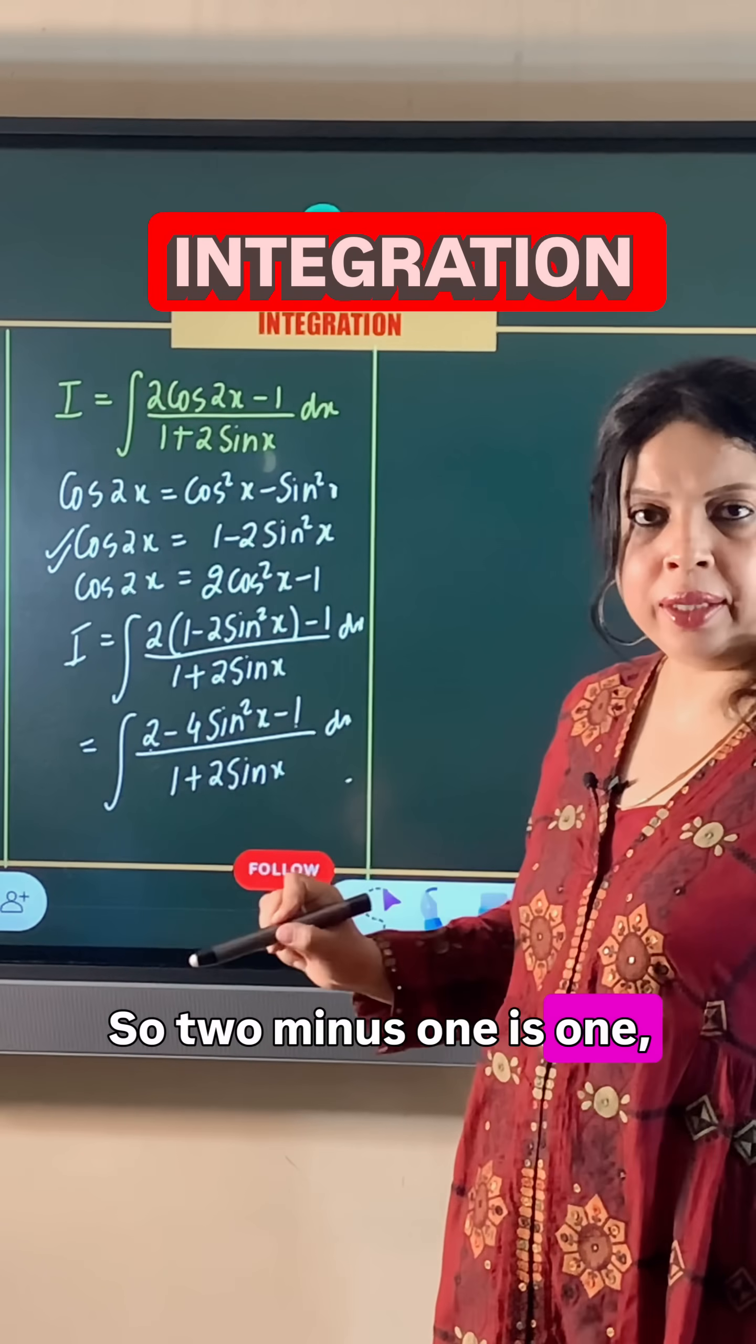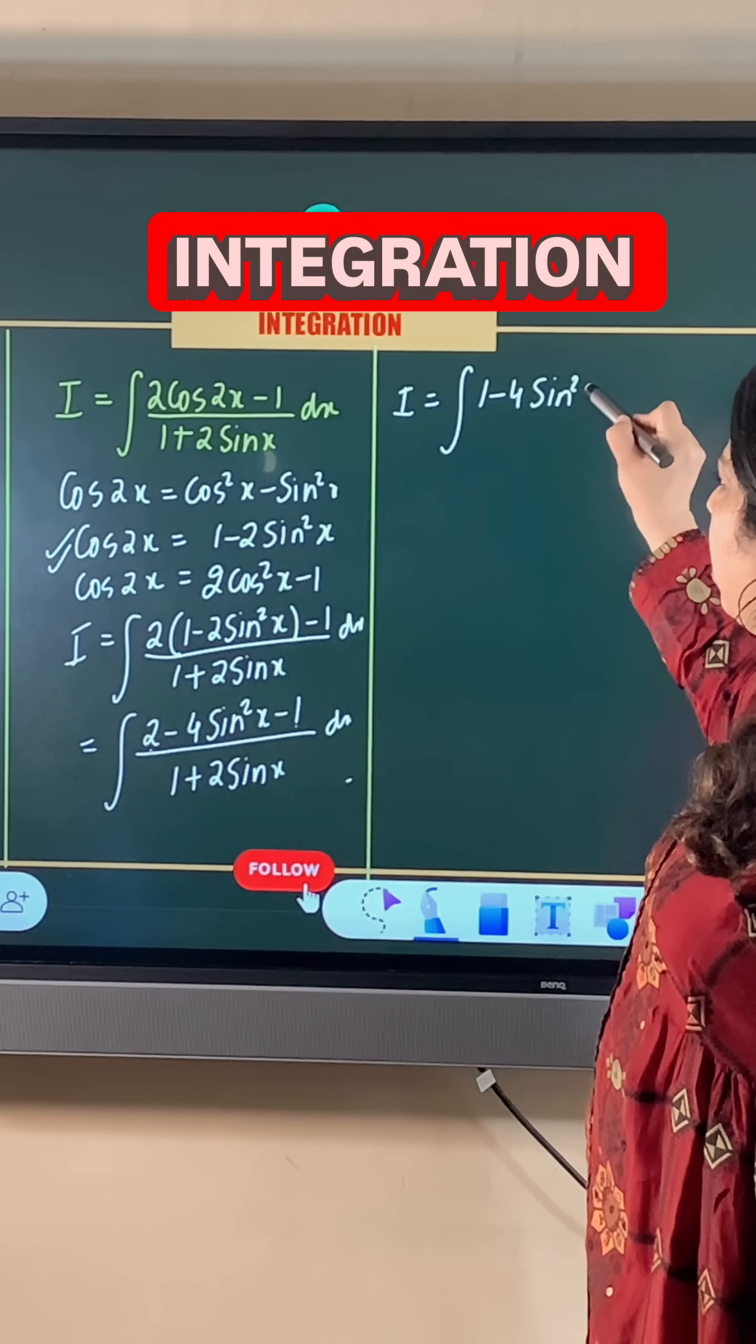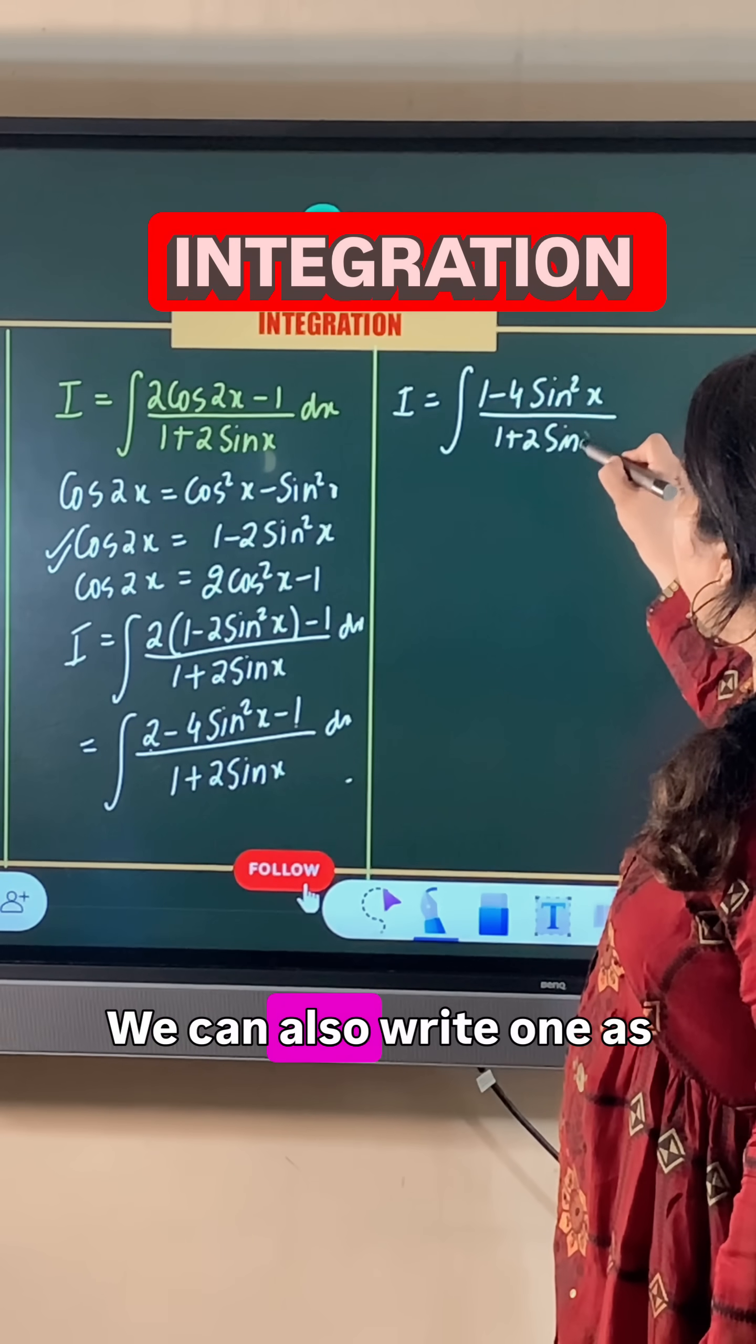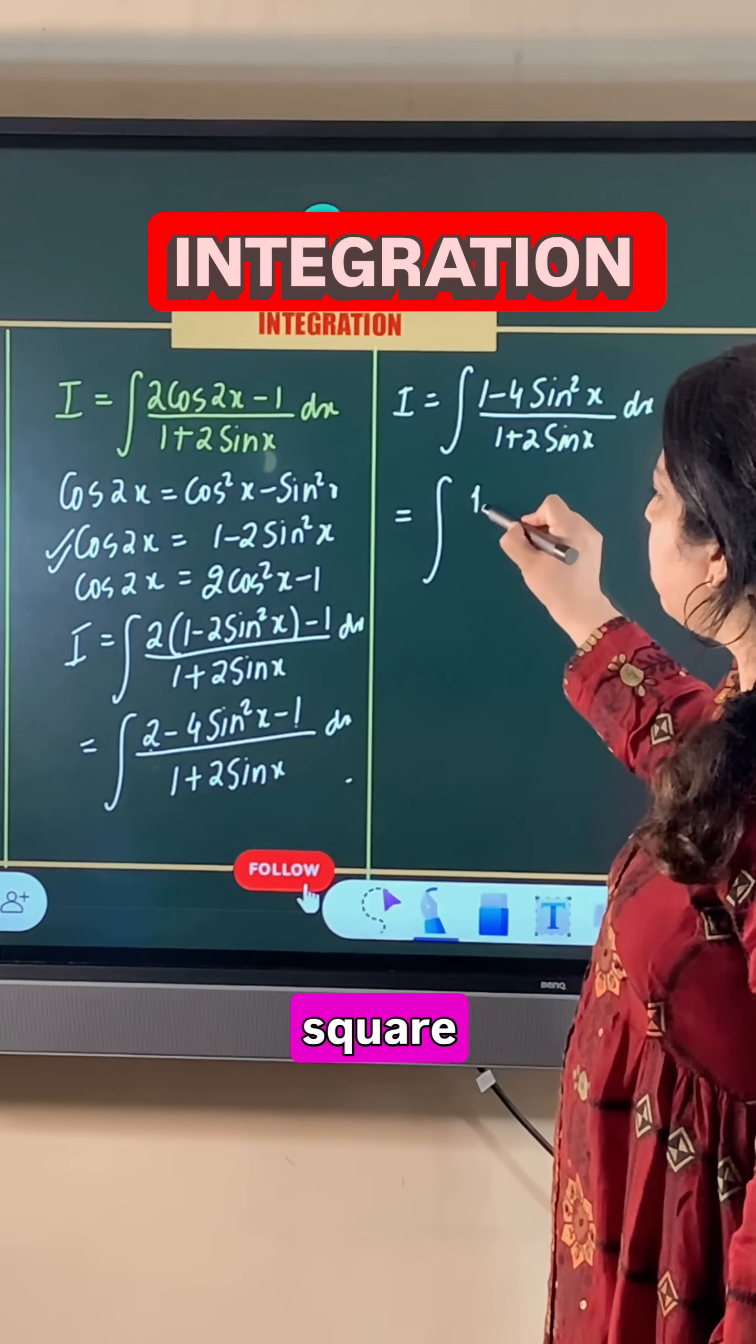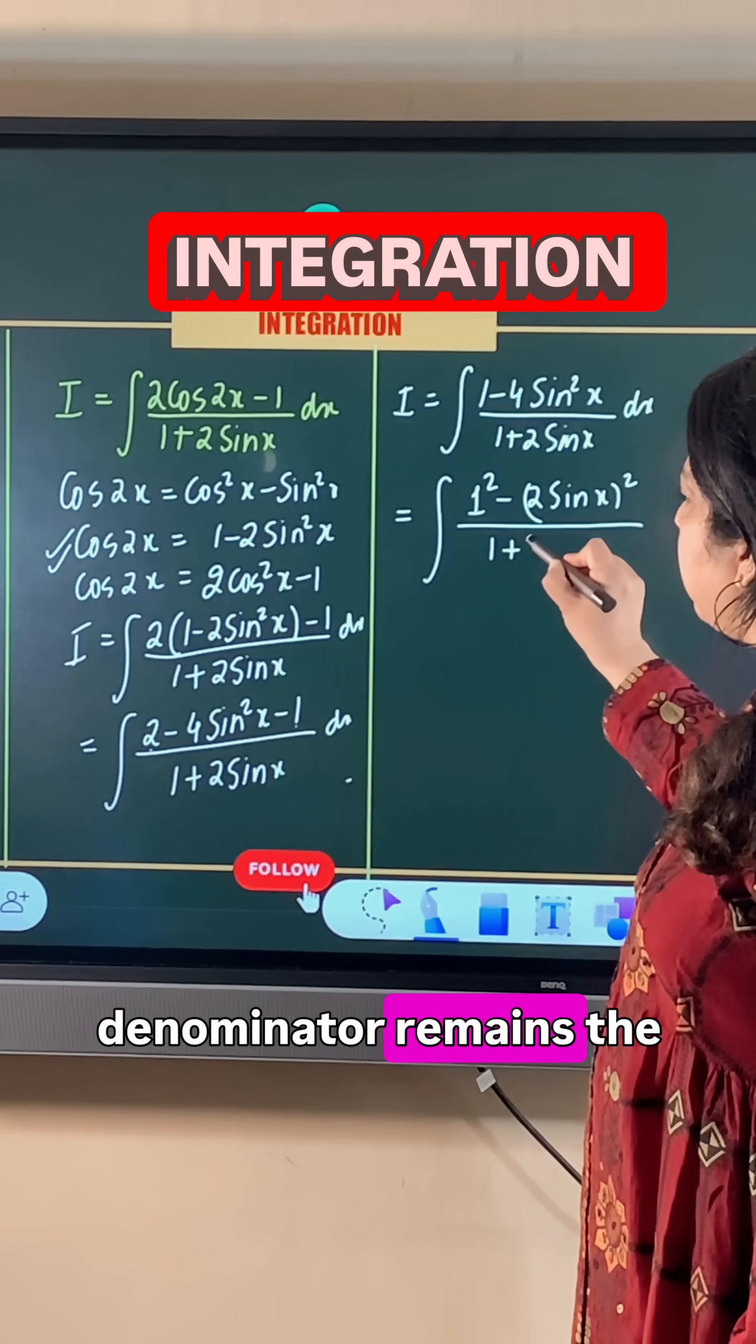We observe that 4sin²x is a complete perfect square. We can write 1 as a perfect square, so this becomes 1² - (2sinx)² in the numerator, and the denominator remains the same.